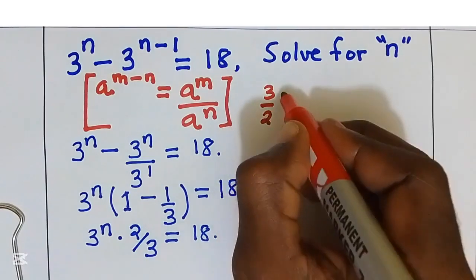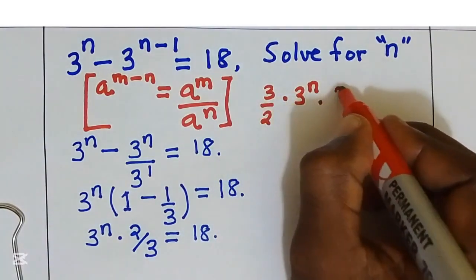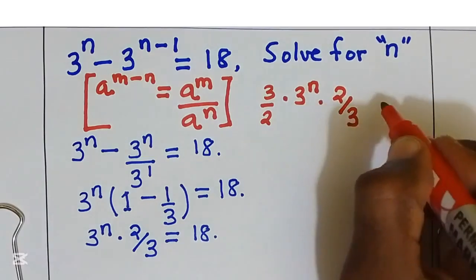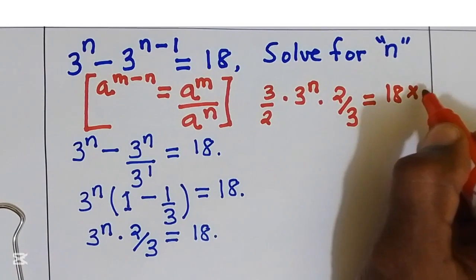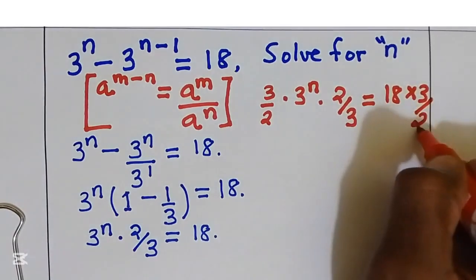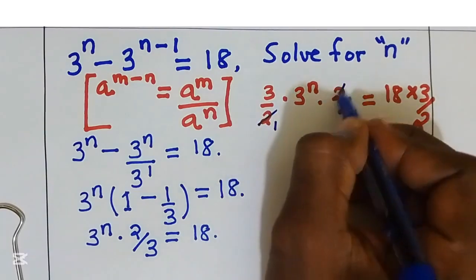3 over 2. 3 power n, multiply by 2 over 3. This is equal to 18 multiply by 3 over 2. Here I can simplify by 2, 1, by 3, 1.